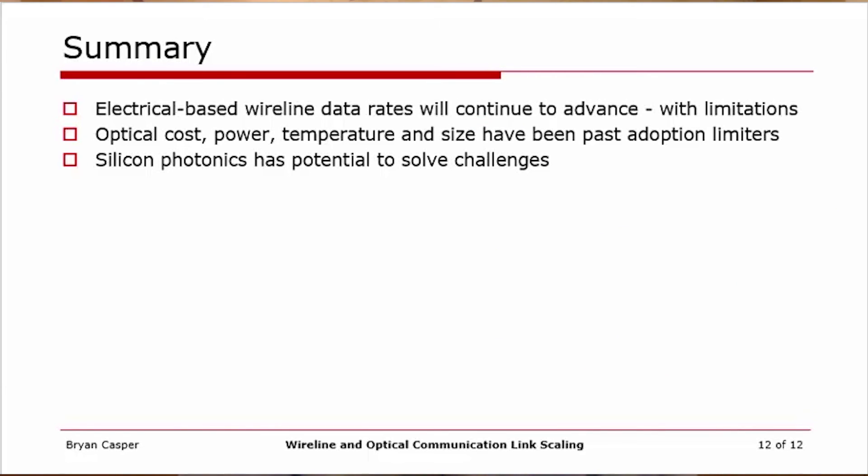In summary, electrical-based wireline data rates will continue to advance, even to 200 gigabits per second and maybe beyond. But what will retract is the distances associated with those very high data rates. In the past, optical cost, power, temperature sensitivities, and size have been great adoption limiters. But many of those problems are being actively addressed, and the distance at which we can have cost- and power-effective optical links will shrink to help fill that gap in the future.